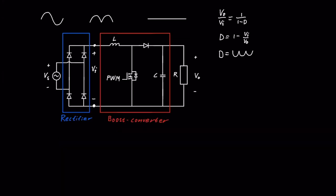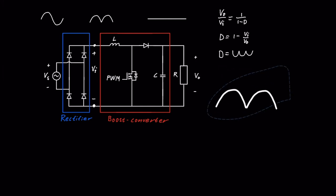In order to have a power factor of 1, the input current into the boost needs to have the same waveform as the input voltage. However, because the MOSFET is switching on and off, the current will also switch — there will be a ripple. So on average, it will be the absolute value of a sinusoidal waveform.